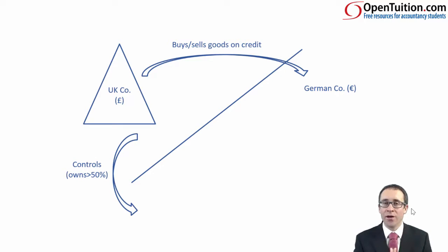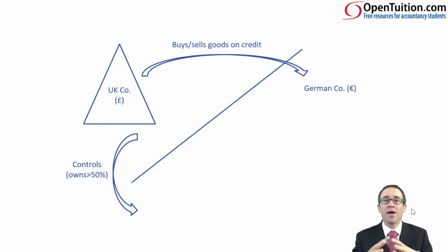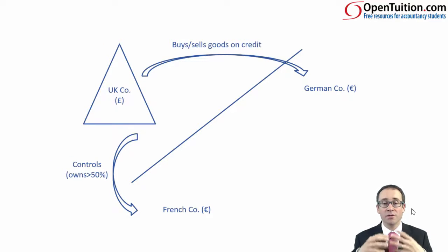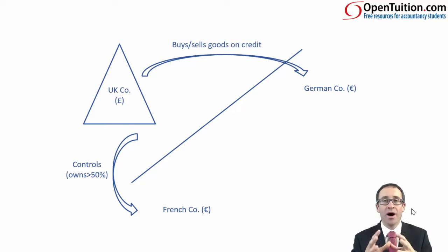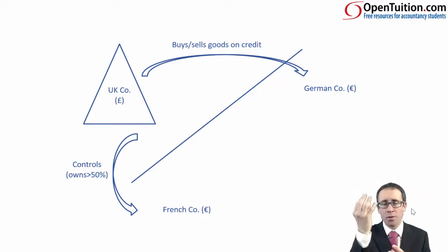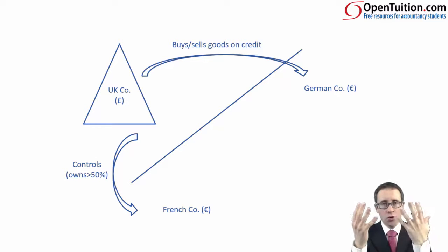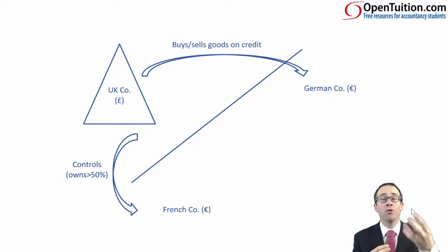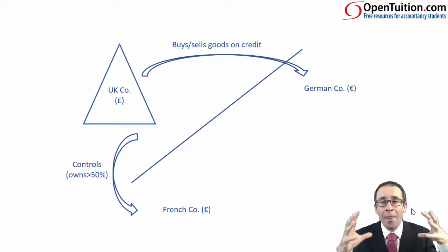What we're going to look at now is advancing things a little bit further with regards to group accounts. You could have a UK parent company that controls — so owns greater than 50%, to keep it simple — and so has the power to direct the operations of a company based overseas. That company based overseas has the functional currency of the euro, and that euro currency is different to the currency that the group accounts are presented in. So, when we go to consolidate — taking all the assets, liabilities, and income of the parent and adding them to those of the subsidiary — we can't just take pounds and add them to euros. We need to adjust the euros and convert them into the currency that the group presents its financial statements in, and then do the consolidation.